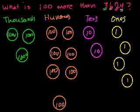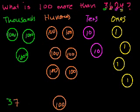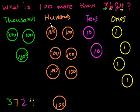So now I have 700, and everything else stayed the same. I have 3,000, 7 hundreds, two 10s — that's 20 — and four 1s — that's 24. So what is 100 more than 3,624? It's 3,724. We just incremented the 100s digit by 1.